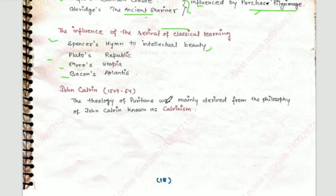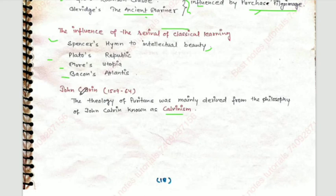John Calvin: the theology of the Puritans was mainly derived from the philosophy of John Calvin, known as Calvinism. So Calvinism is John Calvin's theology.